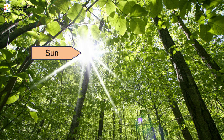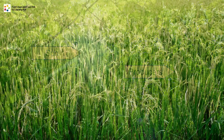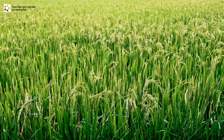The sun is the main source of energy on Earth. Plants are called producers because they can make their own food using light energy from the sun. Animals cannot make their own food, so they depend on plants and other animals for food.